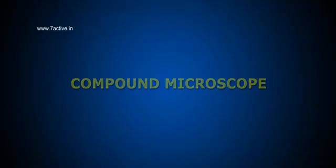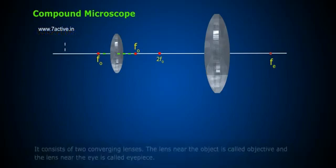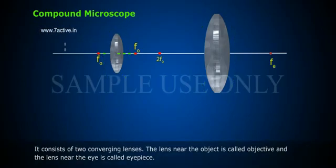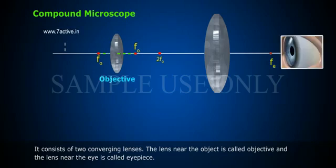Compound Microscope. Description: It consists of two converging lenses. The lens near the object is called objective and the lens near the eye is called eyepiece.